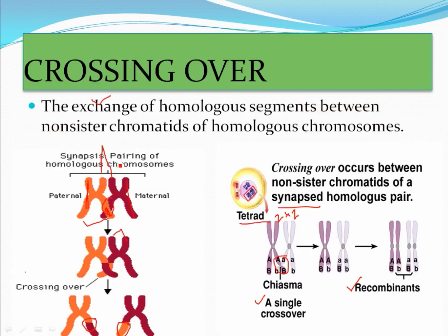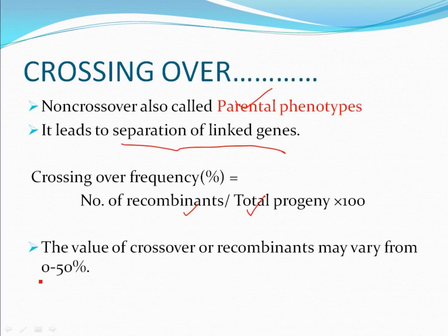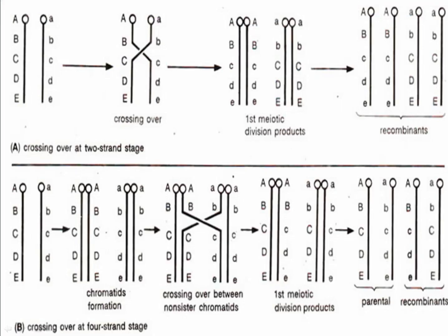Out of the four chromatids in a tetrad, only two chromatids are participating in crossing over and two are not. It means the crossing over frequency can be a maximum of 50 percent, because only two chromatids out of four are participating. Crossing over frequency will always be less than or equal to 50 percent, because both two chromatids cannot participate 100 percent of the time. So the value of recombinants may vary from zero to 50 percent; crossing over cannot occur more than 50 percent.